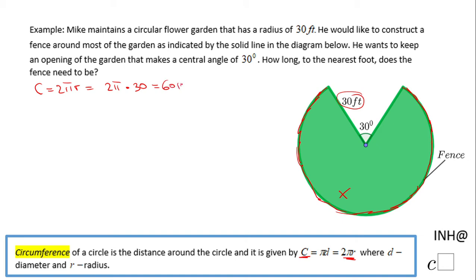So I end up with 60π feet. This is the circumference of this green circle, which is the flower garden. However, we're gonna just go an arc length of 330 degrees.